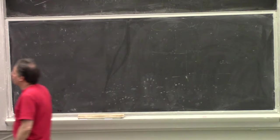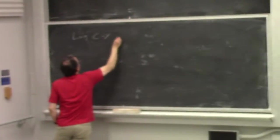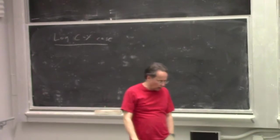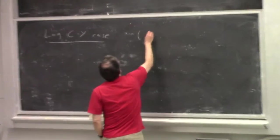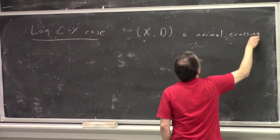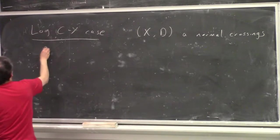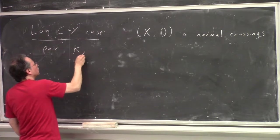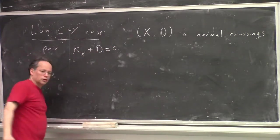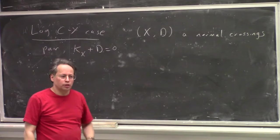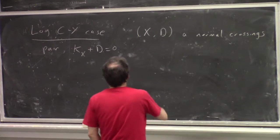So let's focus on the log Calabi-Yau case that Paul has been talking about. So let's fix, for example, here, X,D, normal crossing pair with the property that K_X plus D equals 0.